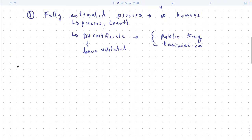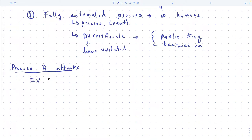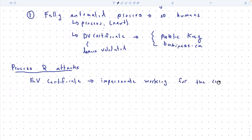Let's think about attacks on the process. For EV certificates, there's not much you can do other than a sophisticated impersonation attack. You could say 'I work at Concordia and this is my public key' and try to trick the CA into issuing it.